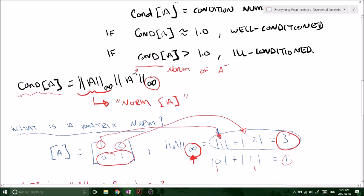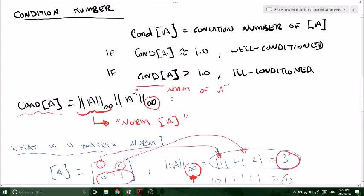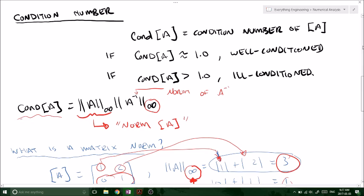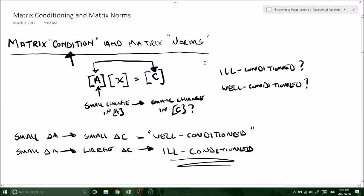And we found that by multiplying the norms of our original matrix by the norm of the inverse matrix. So there you have it. We've just calculated condition number and the norms and found out if our system of equations or our matrix was ill-conditioned or well-conditioned.